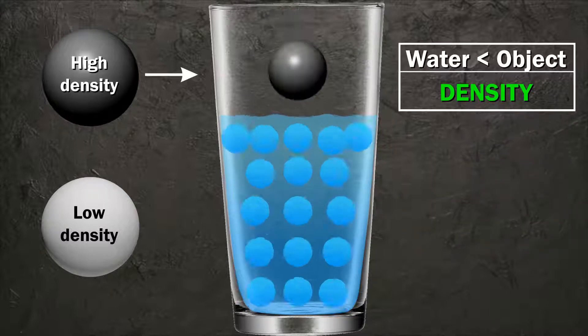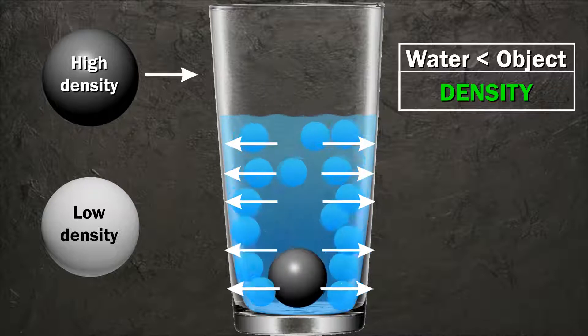Because of this pressure difference, water particles move from the base of the object to the sideways and make way for the object.